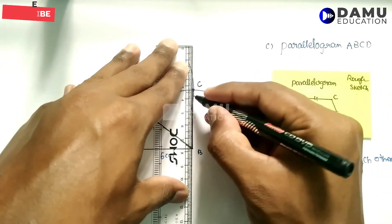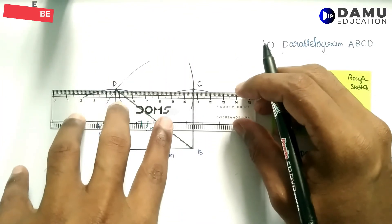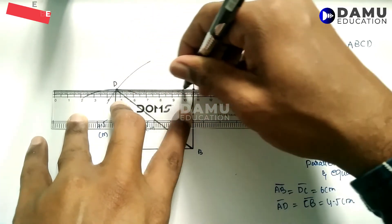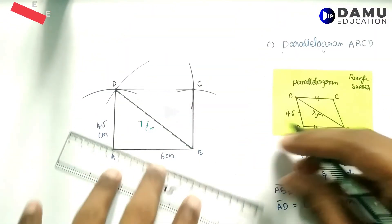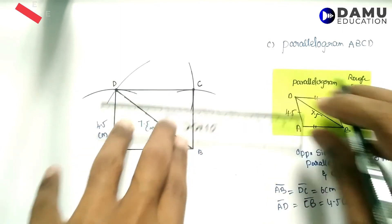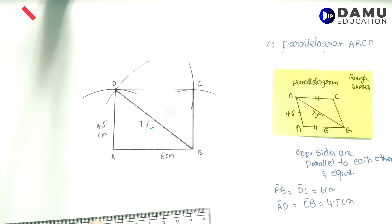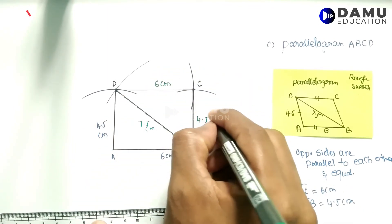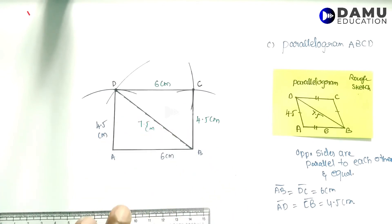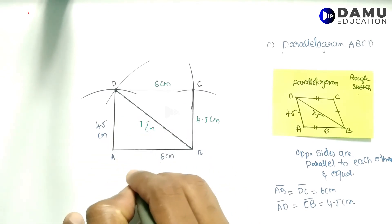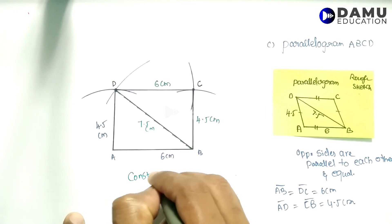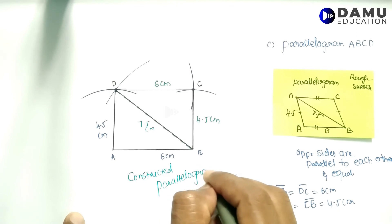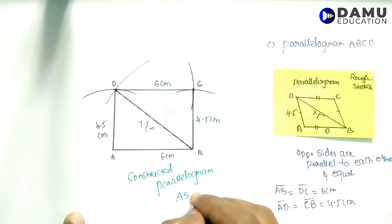Join all the lines. We now have the completed parallelogram ABCD with the given dimensions — AB equals 6 centimeters, AD equals 4.5 centimeters, and diagonal BD equals 7.5 centimeters. The parallelogram ABCD has been successfully constructed.